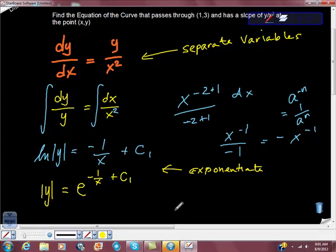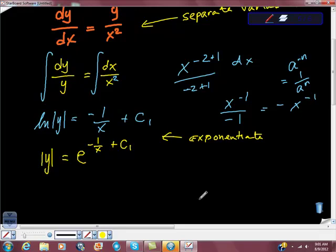Now remember from here, this freaks people out, but it's not bad. So y is equal to c times e to the negative 1 over x. That's our constant there. So far, so good.